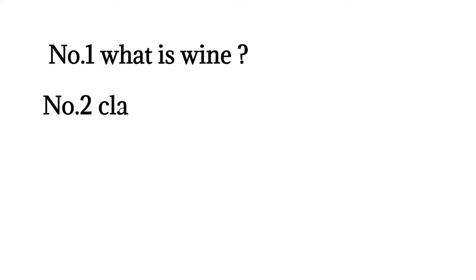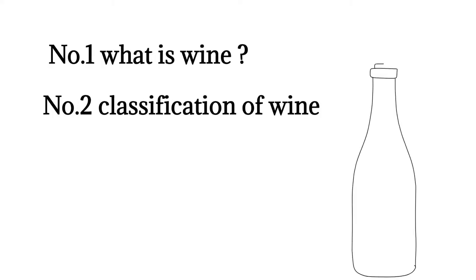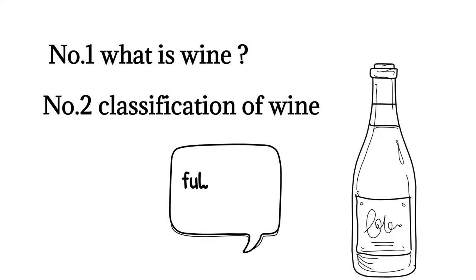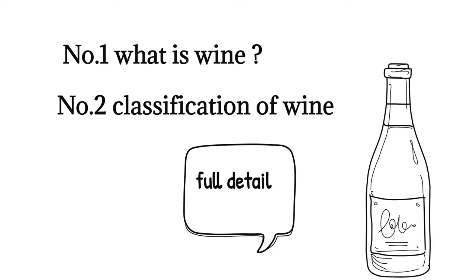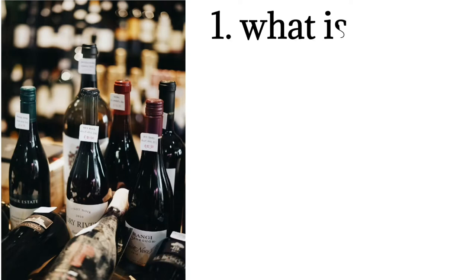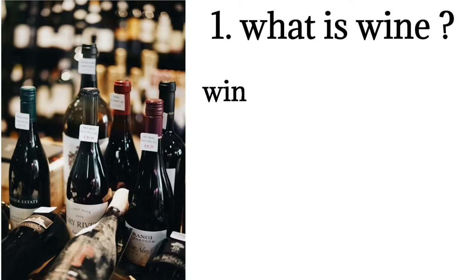Hello friends, in this video we are going to talk about wine — what is wine and classification of wine, full details one by one. Wine is an alcoholic beverage made out of fermented grape juice.